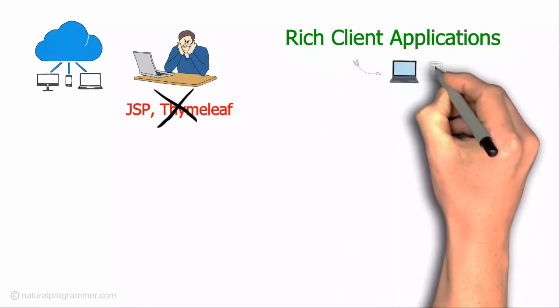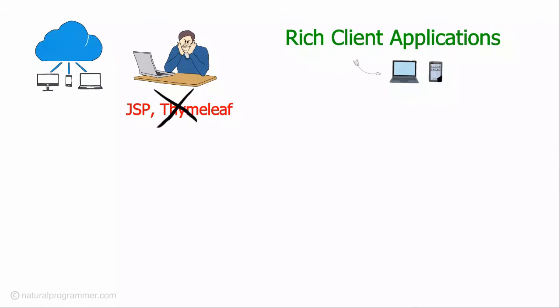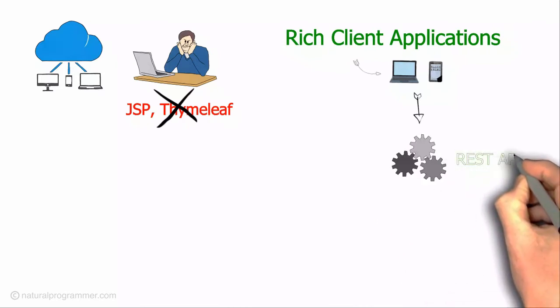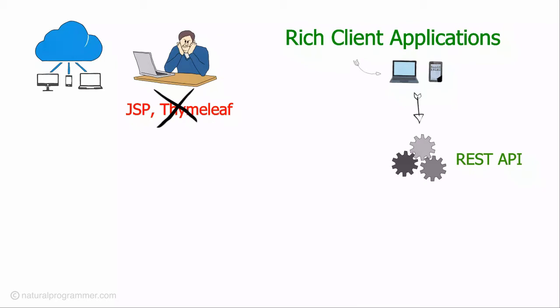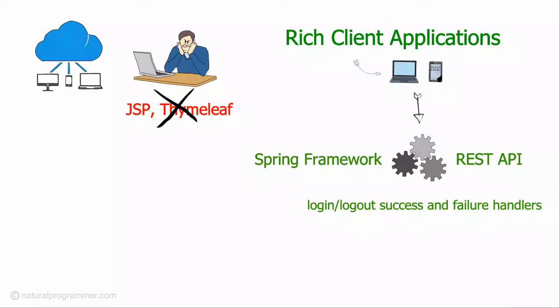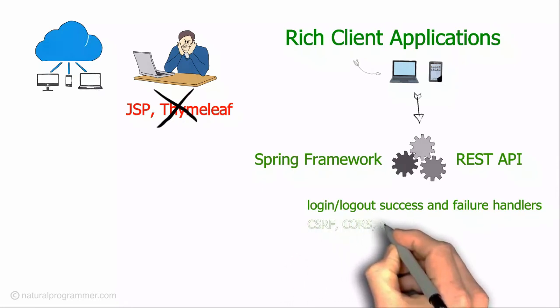In rich client applications, on the client side you will have JavaScript — for example Angular.js — or mobile apps, and on the server side you will have some API like a REST API. For developing these kinds of APIs, Spring Framework is a great solution, but the default configurations of Spring Framework favor server-side templating like JSP or Thymeleaf. So if you are planning to develop a REST API using Spring Framework, you have to do some tricky configurations — like coding the login and logout success and failure handlers, customizing CSRF handling, and taking care of CORS.